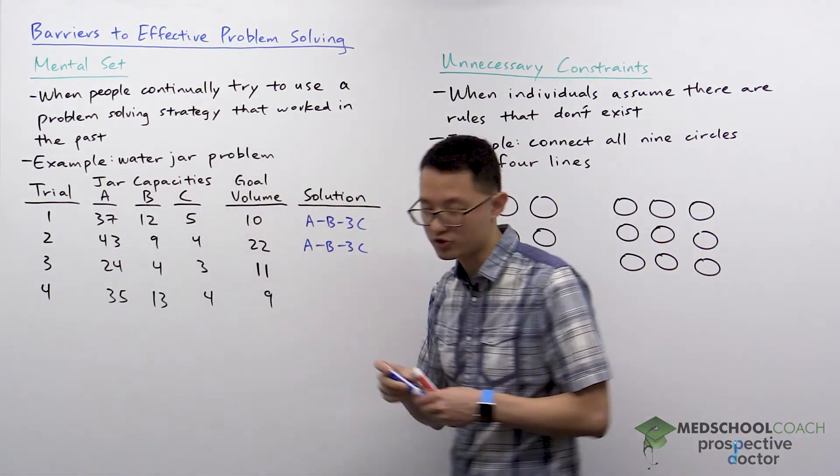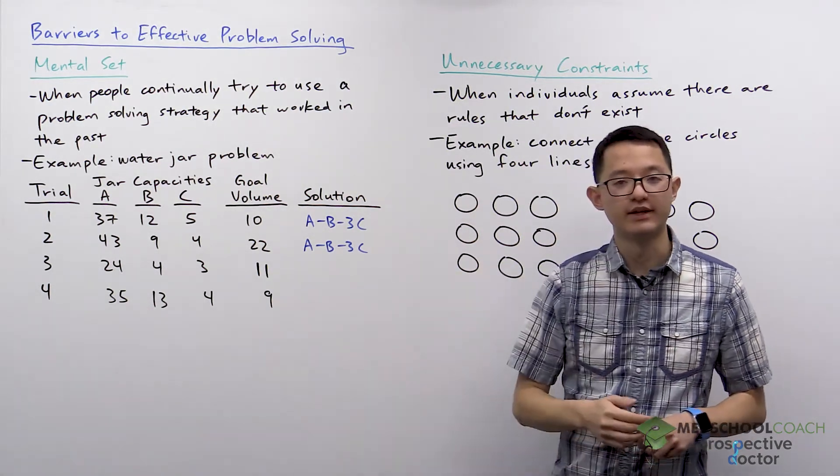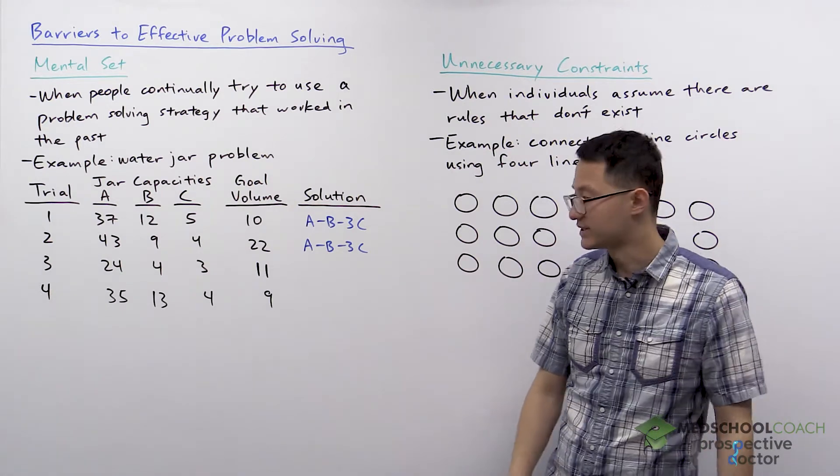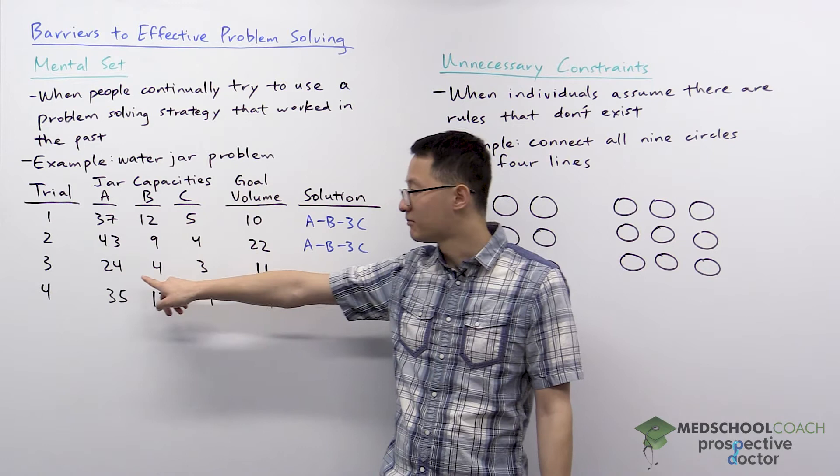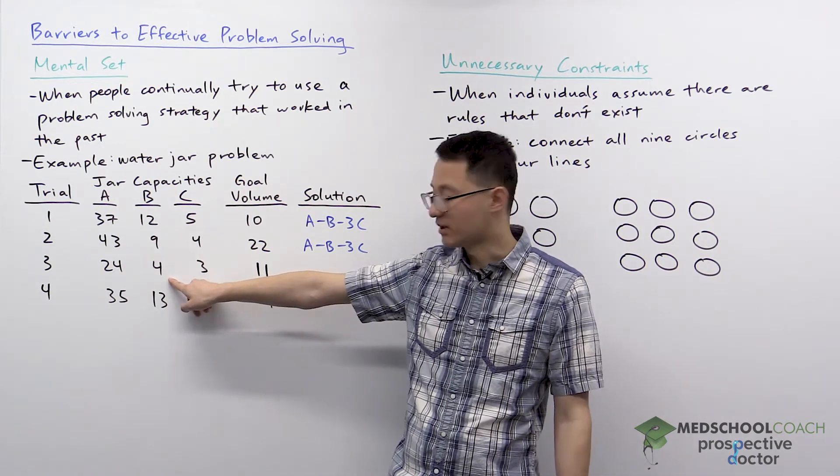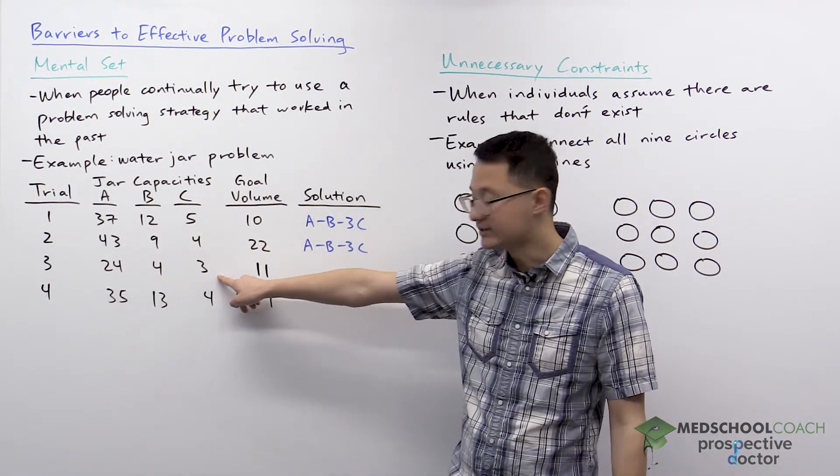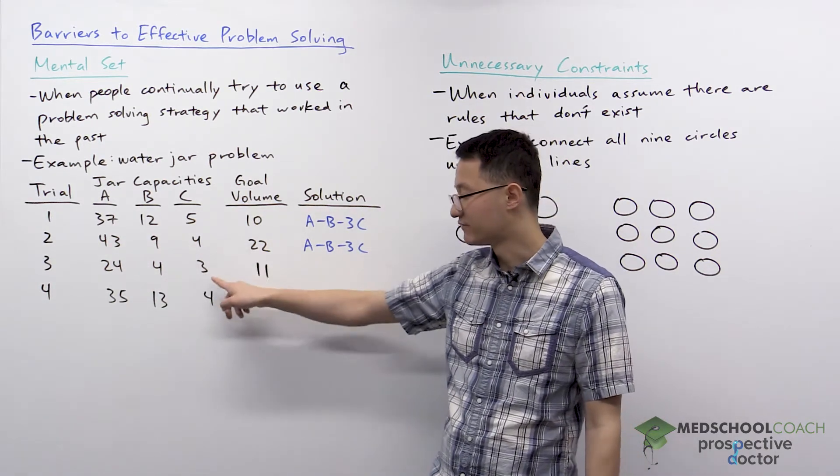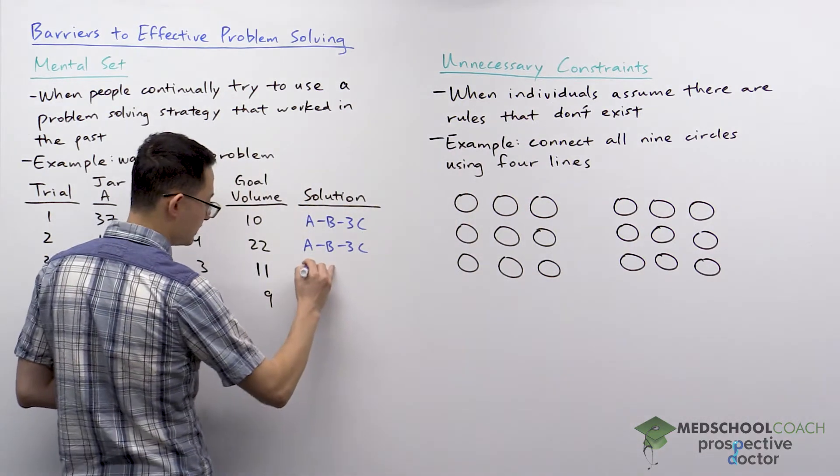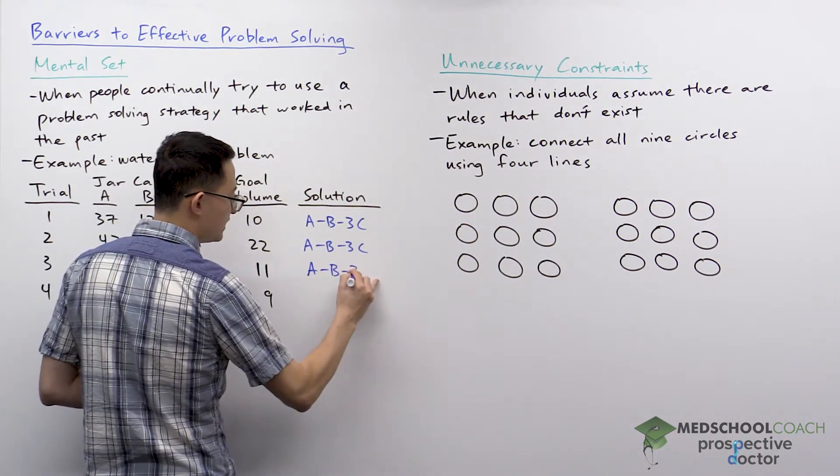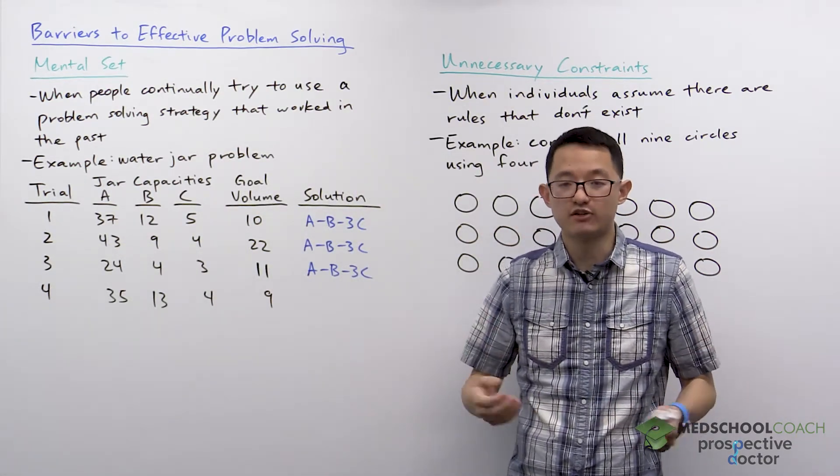The same approach worked. Now let's take a look at trial number three. As it turns out, trial number three is going to be the same. You can take 24 cups of water in A, pour that into B to get rid of 4 cups of water, giving you 20 cups of water left in A. If you pour into C three times, that will get rid of 9 cups of water, leaving you with 11 cups of water that you want. So it's the same solution. It makes sense. They're going to get faster at solving it.